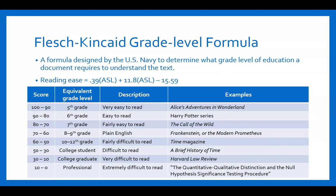The Flesch-Kincaid grade level formula was designed by the U.S. Navy to determine the grade level of education required to understand a text. It took the Flesch formula and tweaked it to give an equivalent grade level needed to comprehend the text. For example, the Harry Potter series is around 6th grade, Time Magazine is 10th to 12th grade, A Brief History of Time is college level, Harvard Law Review is college graduate, and academic journal articles are at the professional postgraduate level.